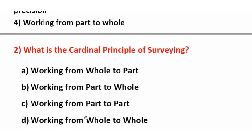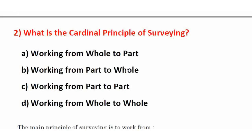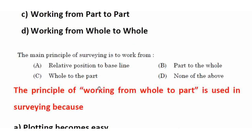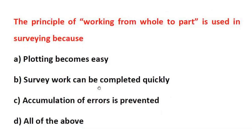Next question: What is the cardinal principle of surveying? The main principle of surveying is working from whole to part. The right answer is option A. Next question: The main principle of surveying is to work from whole to part — right answer option C. Next: The principle of working from whole to part is used in surveying because accumulation of error is prevented, to control the propagation or accumulation of error, and to limit minor errors. Right answer: option C — accumulation of error is prevented.